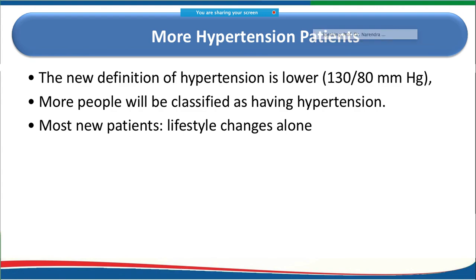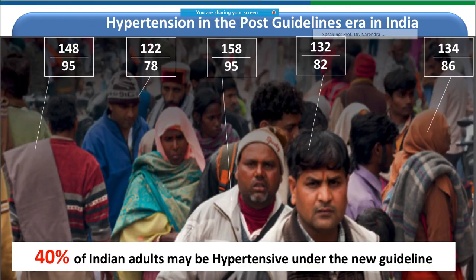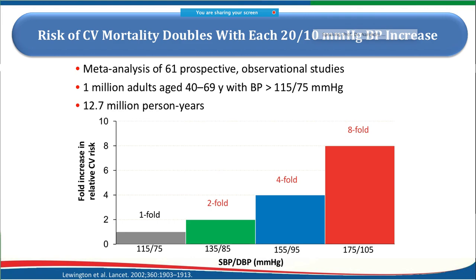With the lower threshold, more people will be classified as hypertensive, so therapeutic lifestyle changes should always be prescribed first. Currently, almost more than 40% of Indian adults will be classified as hypertensive. Cardiovascular mortality tends to double with each 20/10 mmHg increase in blood pressure.